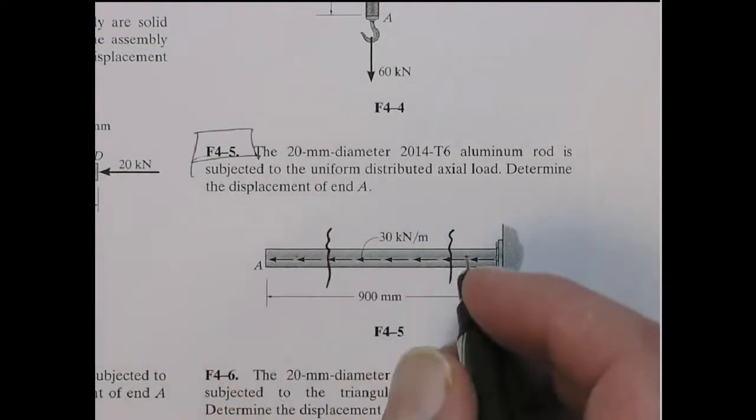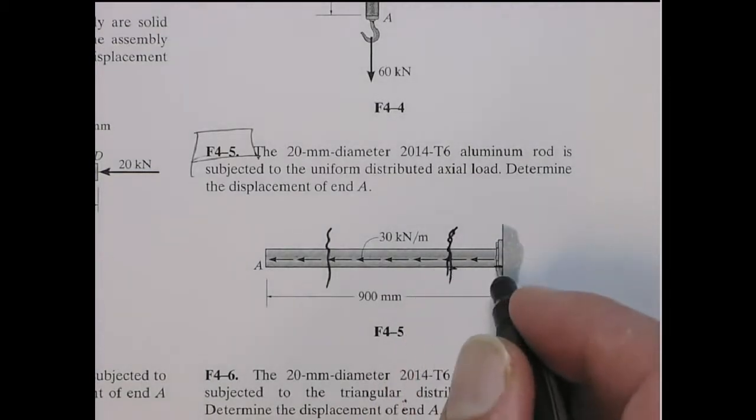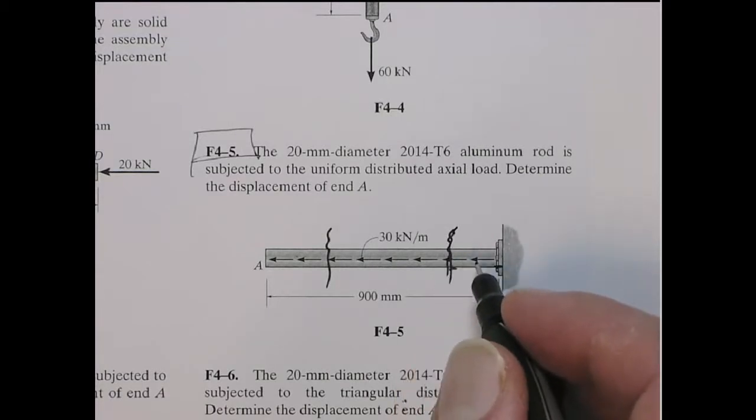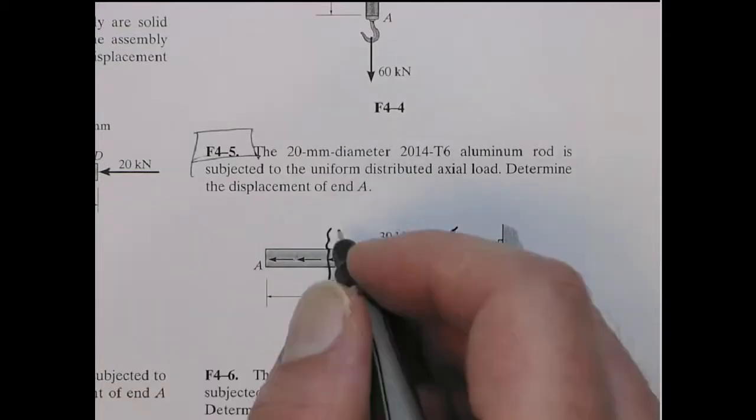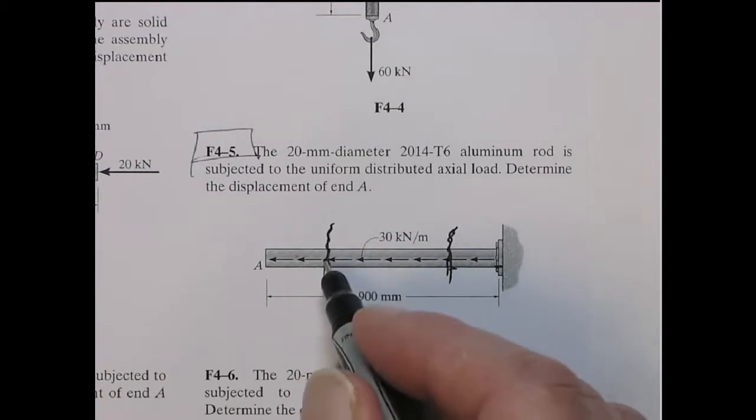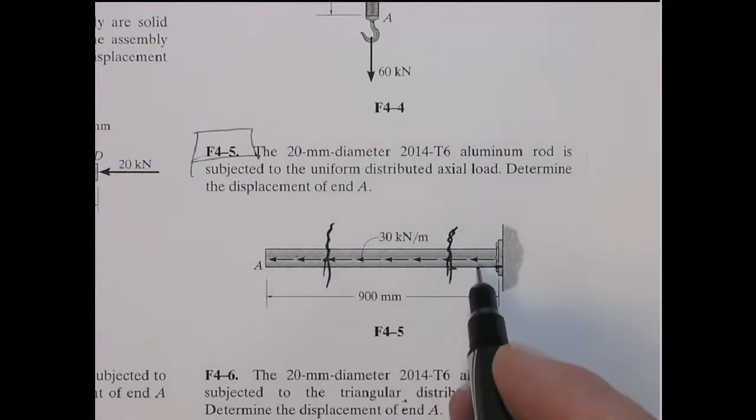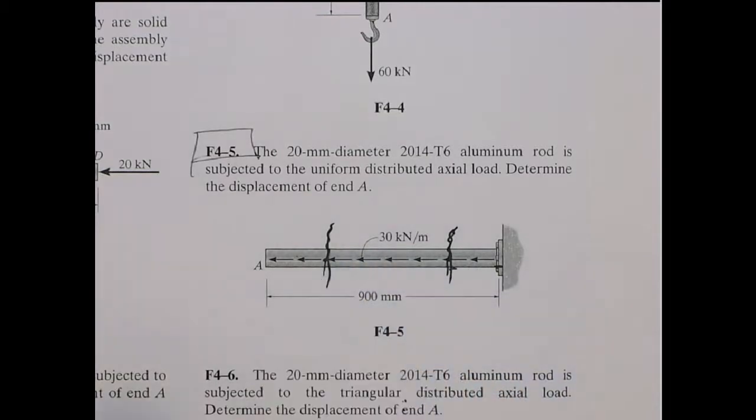You can see that pretty easily. If we look at the section from here to this cut, the total force acting on it is the 30 kN per meter times this length. Whereas if you look at this section, it's the same 30 kN per meter but over a longer length. So as you go up further, make this cut further and further, the reaction force becomes greater.